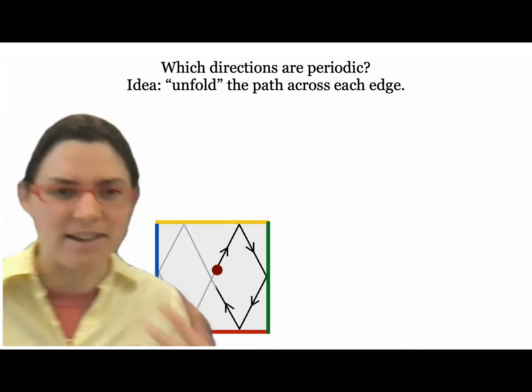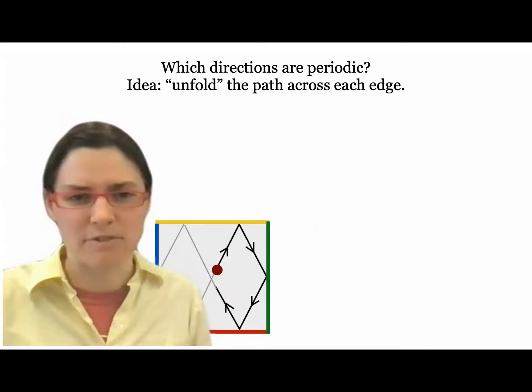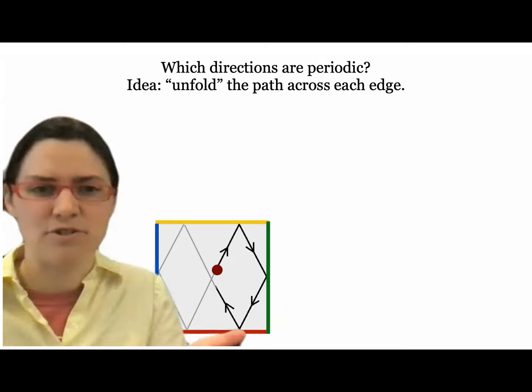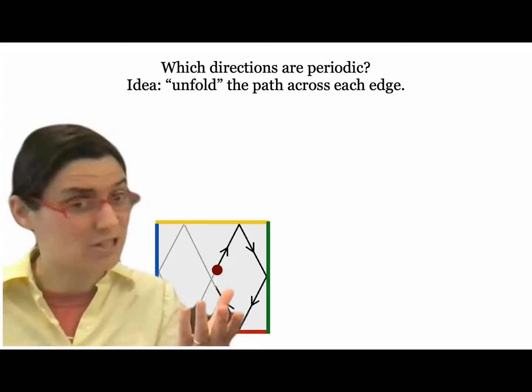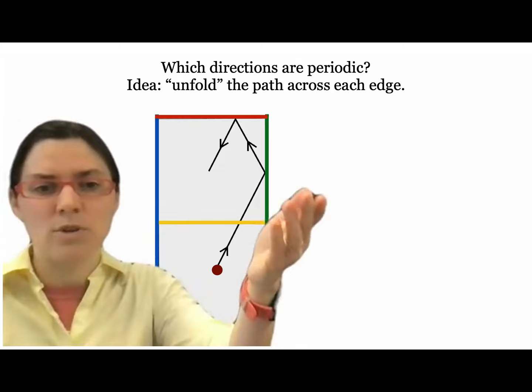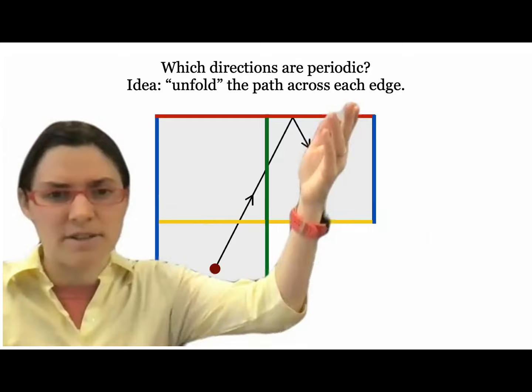You might wonder: which directions are periodic on the square billiard table? Here's the periodic path with period six — it goes in four different directions. The idea is that instead of hitting the top of the table, we create a new copy so the path can go straight. We add new copies each time, and it turns out this piece fits perfectly into the space below.